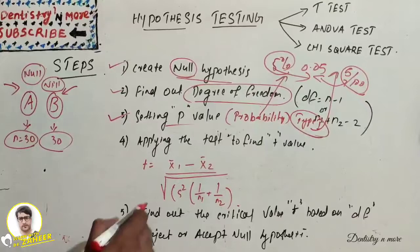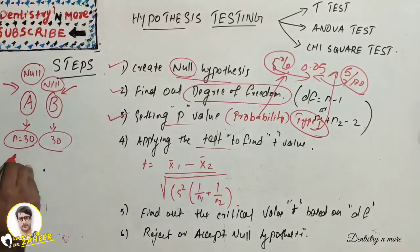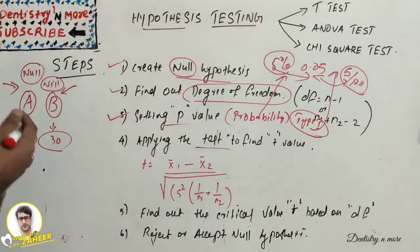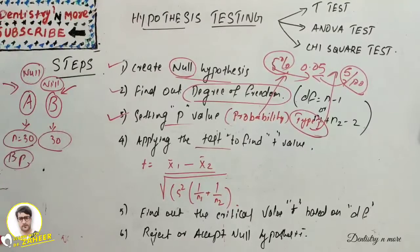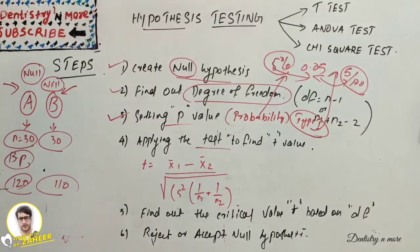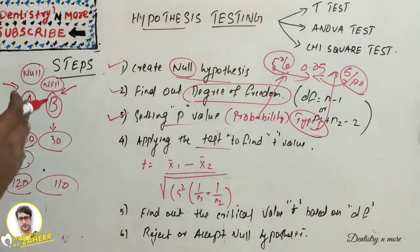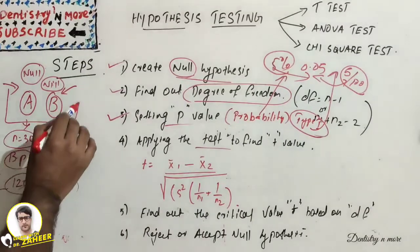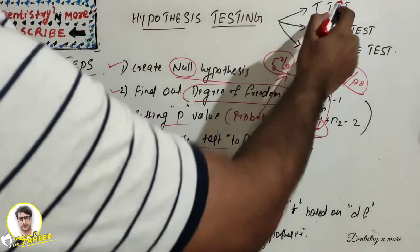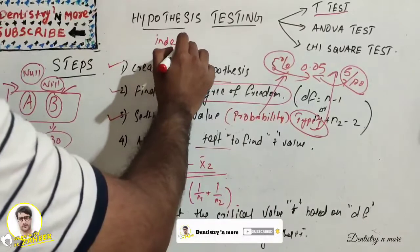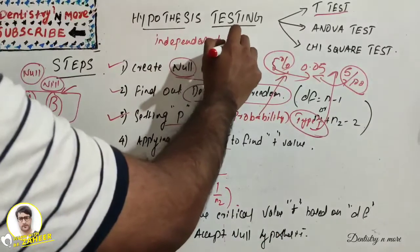The next crucial step is applying the test. We have data — say we are checking blood pressure reduction. Group A has a mean systolic blood pressure of 120 and group B has 110. We need to apply these values into the appropriate test. When comparing two groups, we use the t-test. The t-test has two classifications: independent t-test and paired t-test.